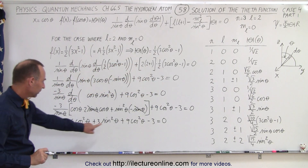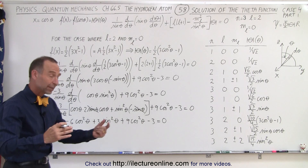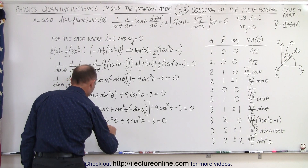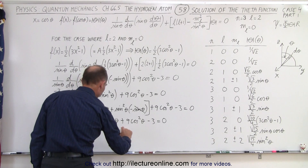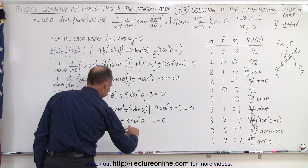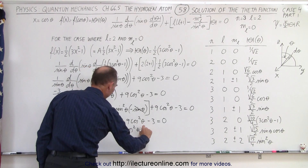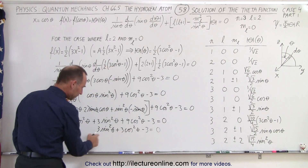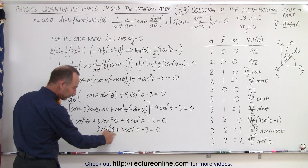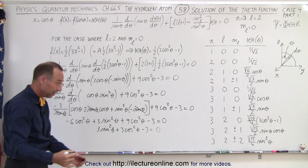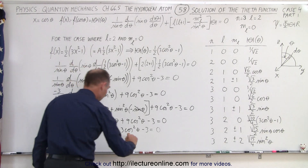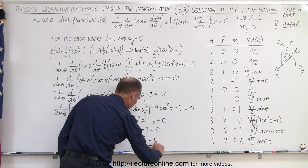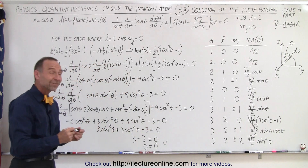We have minus 6 and plus 9 on the cosine squared terms, so we simplify to 3 times cosine squared of theta. That gives us 3 times sine squared of theta, plus 3 times cosine squared of theta, minus 3, equals 0. Factoring out a 3: sine squared of theta plus cosine squared of theta equals 1, so this becomes 3 minus 3 equals 0, or 0 equals 0.